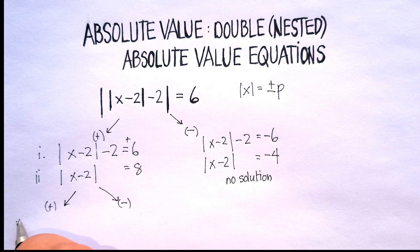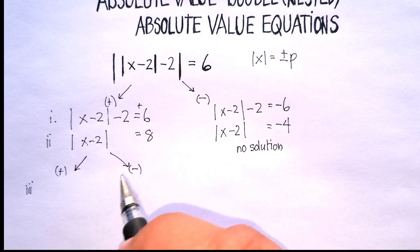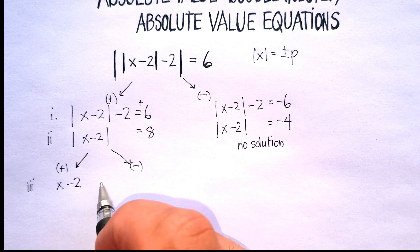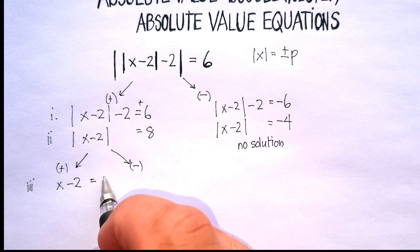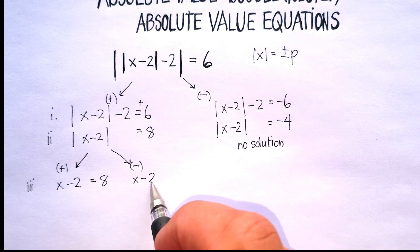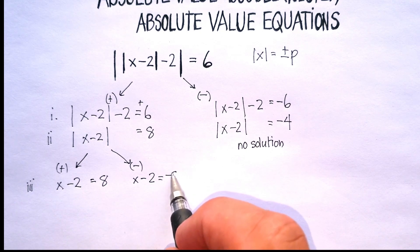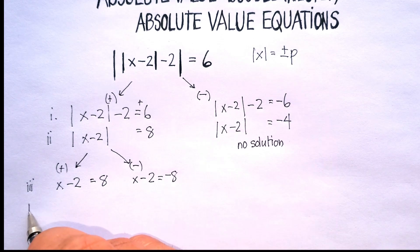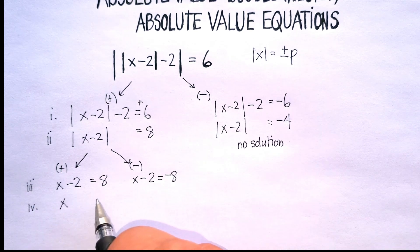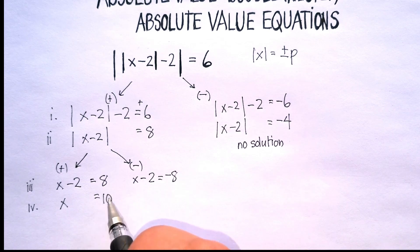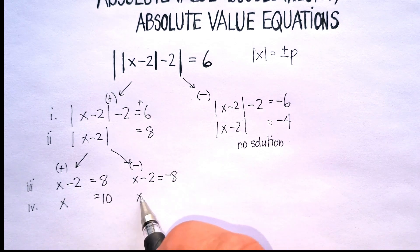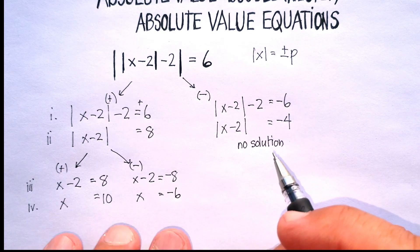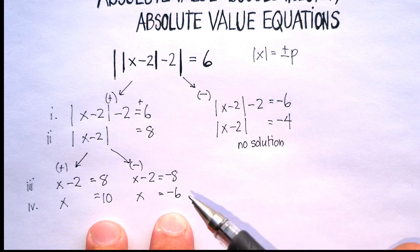So in step 3, I'm going to have x minus 2 equal to positive 8, and x minus 2 equal to negative 8. And we have no solution on the other side. Step 4 — add 2 to both sides. x is equal to positive 10, or x is going to be equal to negative 6. So we have two solutions here, but we can't stop there — we have to go back and check.